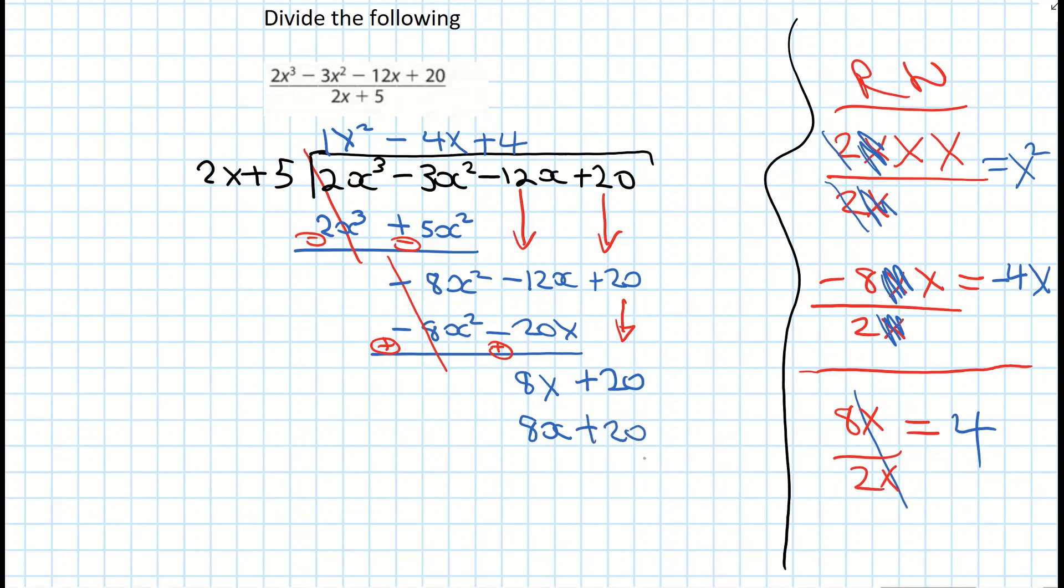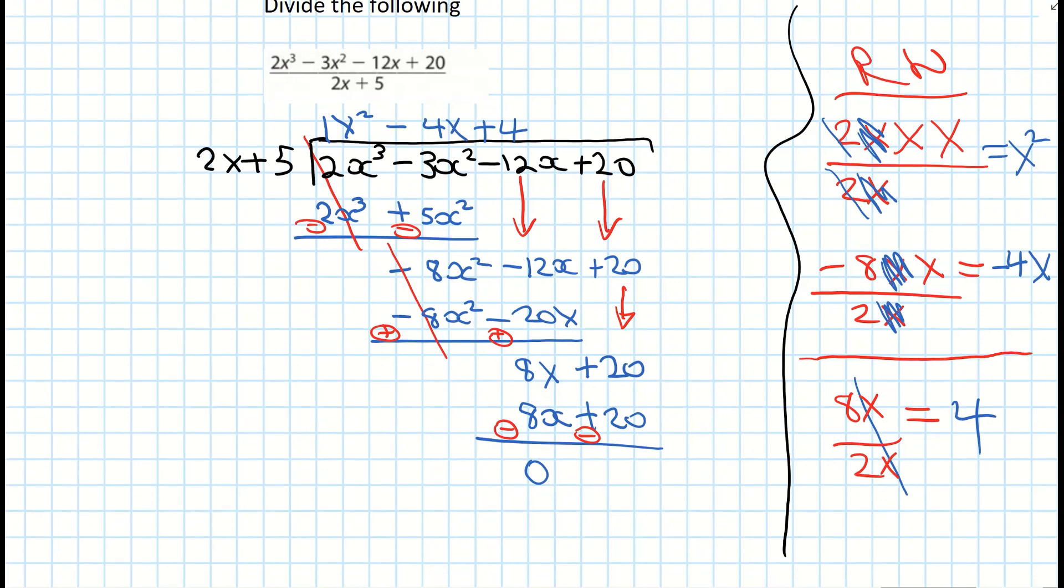You can see now we have the same terms. Draw your line underneath. Again we want them to be subtracted. So we change the sign. So that becomes a minus. Minus. And then you can hopefully see 8x subtract 8x is 0. 20 take away 20 is also 0. So there is our remainder 0.